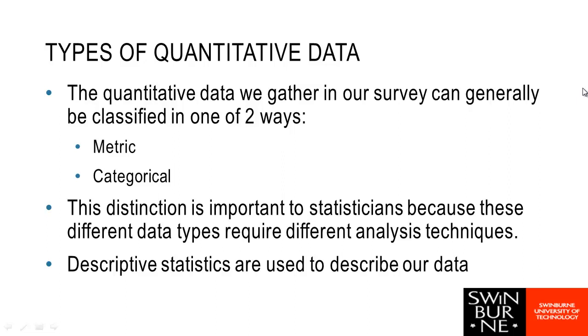When we're looking at quantitative data, it can generally be classified in two different ways. It can either be classified as metric or as categorical. Categorical is where we have groups or categories. Metric is where we have some sort of measurement to our data. Out of a typical questionnaire or survey, we normally have a little bit of a mixture of categorical and metric.